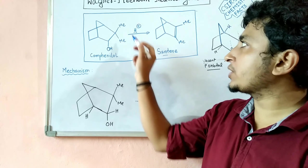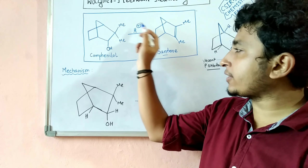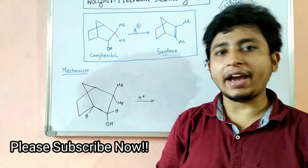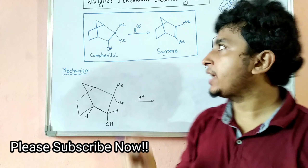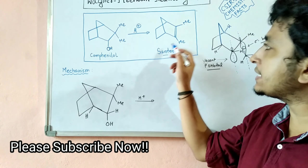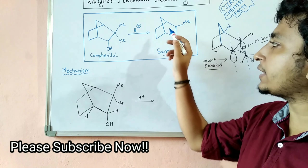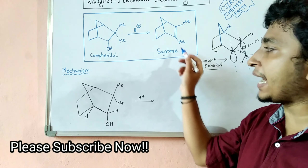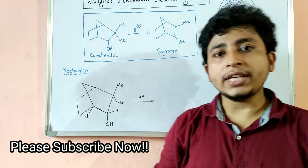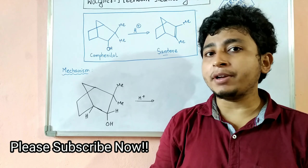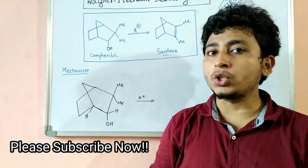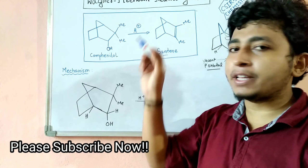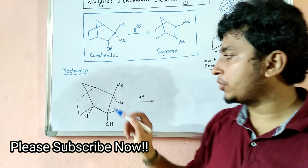When the alcohol is treated with acidic conditions, it will form an alkene via rearrangement. You can see this is the structure of the alkene, which is known as santalene — an essential element of sandalwood oil. We will now discuss how this rearrangement takes place.